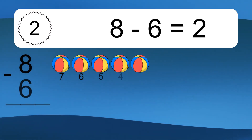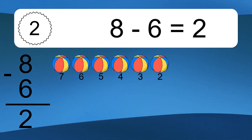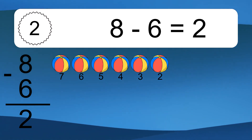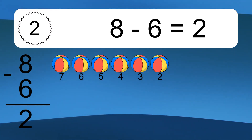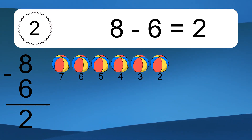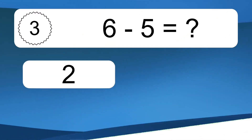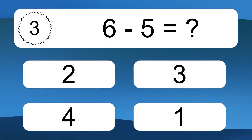8 minus 6 equals 2. Let's count it: 7, 6, 5, 4, 3, 2. 6 minus 5 equals what?